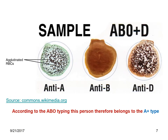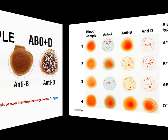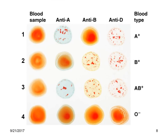This slide shows the reaction of a blood sample with anti-A serum, anti-B serum, and anti-D serum. Looking at sample number one, there is a reaction in anti-A and anti-D but no reaction in any others, and therefore this person belongs to type A positive.